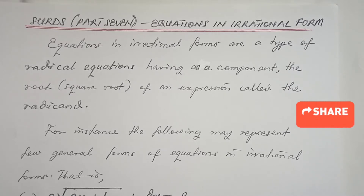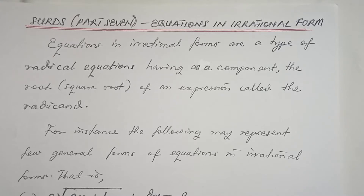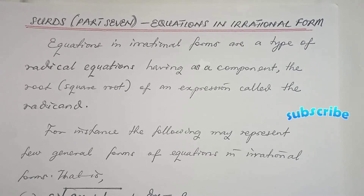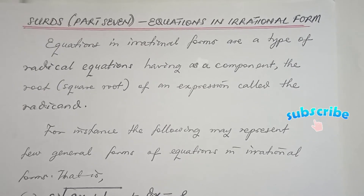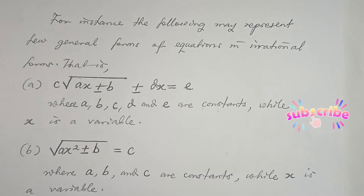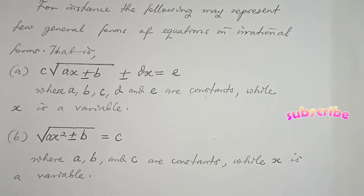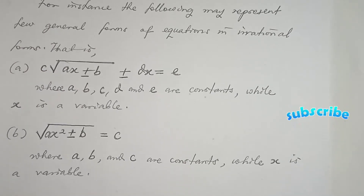So to quickly recap: equations in irrational forms are simply a type of radical equations that have as one of their components a root — the root of an algebraic expression we call the radicand. Now I'm going to show you three out of several ways an equation in irrational form can appear.